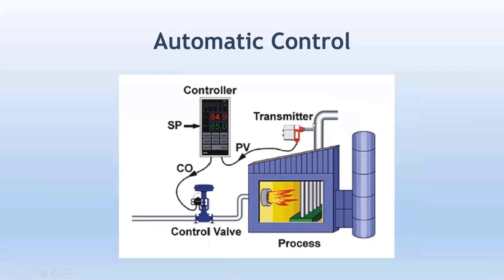Instead of a gauge, you put in a transmitter. The transmitter is connected to the controller, and the current value of the temperature inside the furnace is measured by the transmitter — that's called the Process Value, or PV. For example, if the temperature inside the furnace is 40, the PV would be 40, and it would be sent by the transmitter in the form of a 4–20 mA signal to the controller.